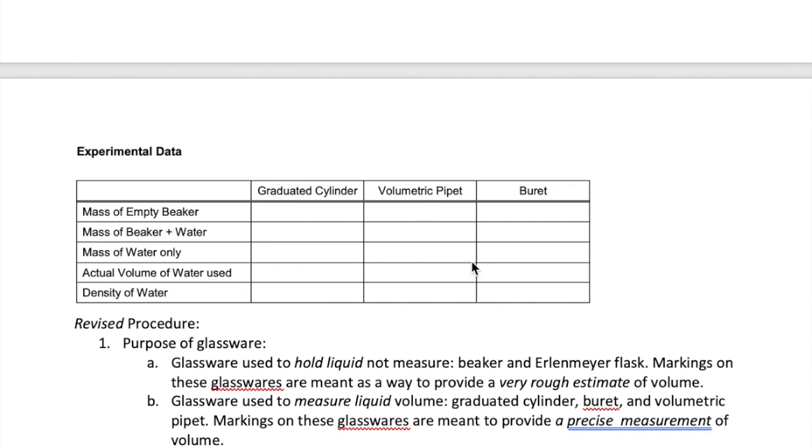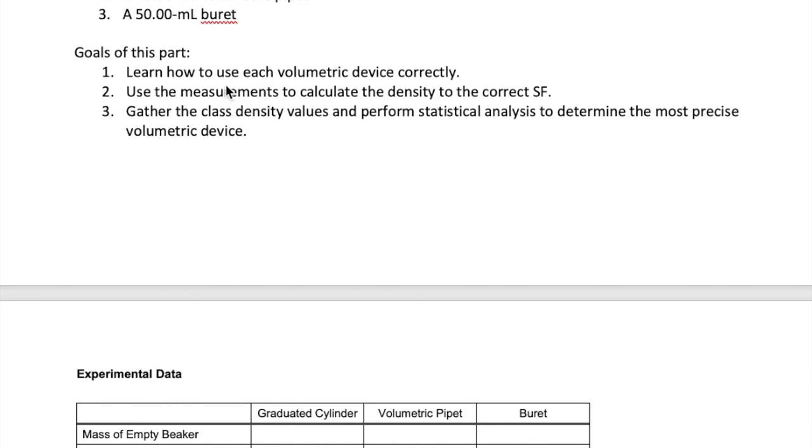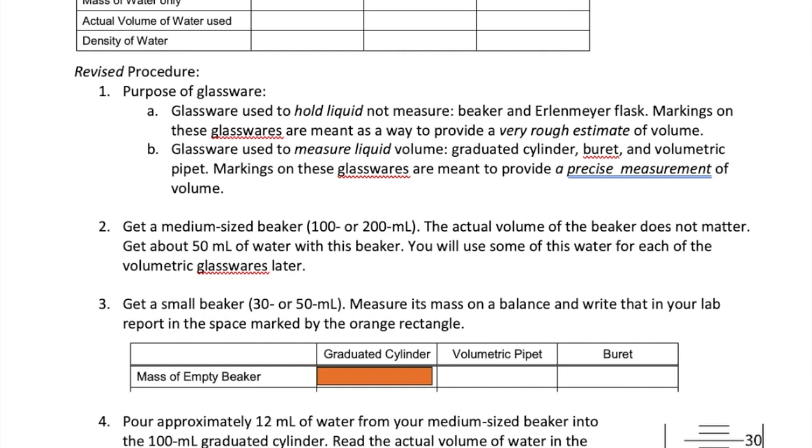Now there are several goals to accomplish in part A of this lab. First, you really want to learn how to use each of these glassware correctly, and that really means reading the volume the correct way for each of the glassware. Secondly, you want to make sure that you calculate the density and apply significant figure rules to determine the final answer. And lastly, use the data gathered by the whole class to calculate statistical quantities that will help us determine which of these three glassware have the highest precision. Your lab procedure gives you step-by-step methods, but I find that students seem to misunderstand the steps. So here, what I would do is describe a revised procedure, which hopefully makes it easier for you to understand what you need to do.